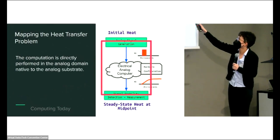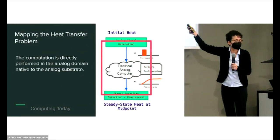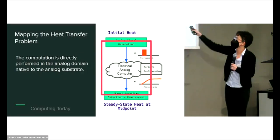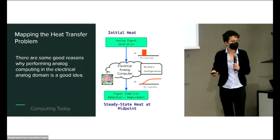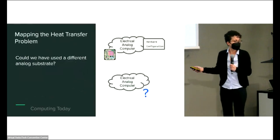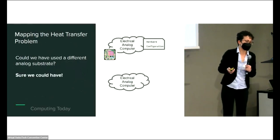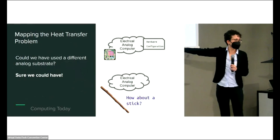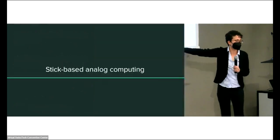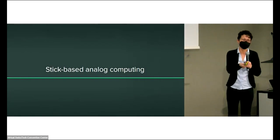What is the program in this computational model? The program is the hardware configuration you write to the analog substrate to get the physics you want, and then the input and output conversion functions that take us from the problem domain to the analog domain and back. So the question here: could we have used a different analog substrate? Sure we could. Let's think of another one. How about a stick?